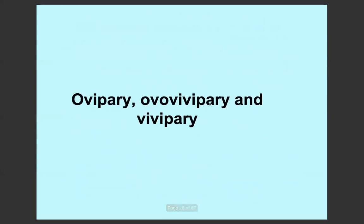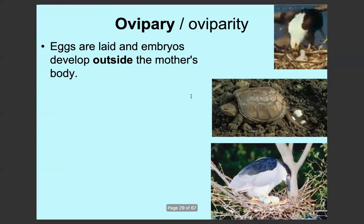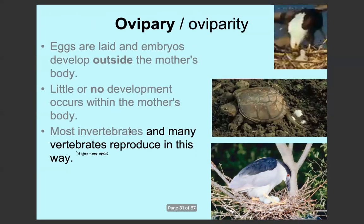There are three types of ways that eggs can develop after fertilisation: oviparity, ovoviviparity, and viviparity. Oviparity is when eggs are laid and embryos develop outside the mother's body, so hardly any or no development occurs inside the mother's body. Most invertebrates and many vertebrates reproduce in this way, including insects, birds, and some reptiles such as turtles or tortoises.